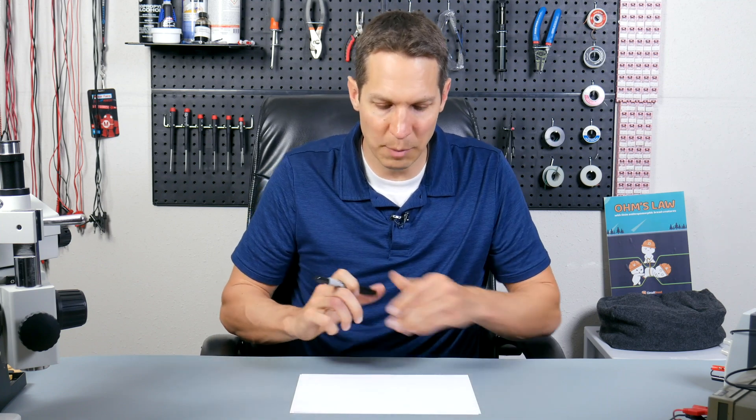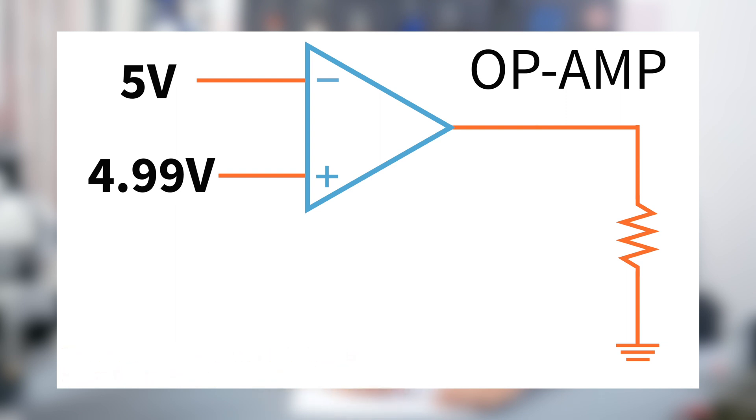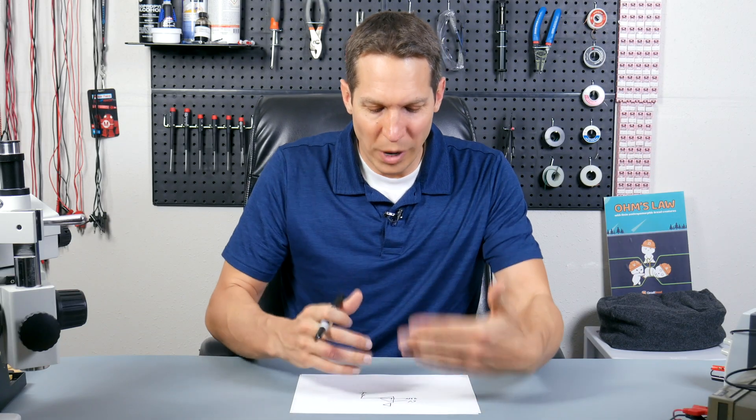I want to use op amps to talk about control systems as well, because the soda example is great conceptually but doesn't really apply to the engineering world. If we take an op amp — you've got your typical op amp, ignoring the power supplies — and you have this input connected to five volts and the other to 4.99 volts, the gain of an op amp is supposedly infinite, and in an ideal op amp it's completely infinite.